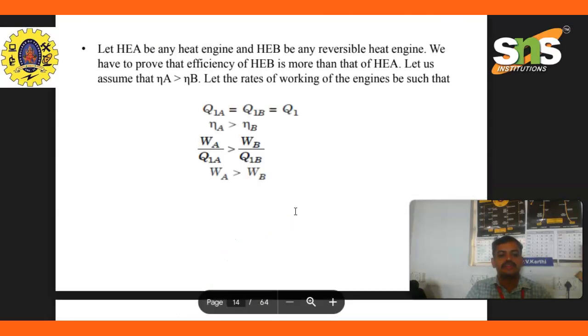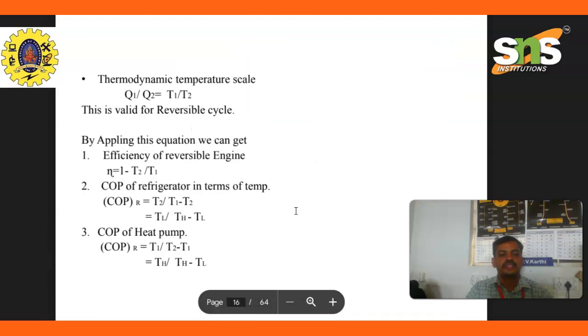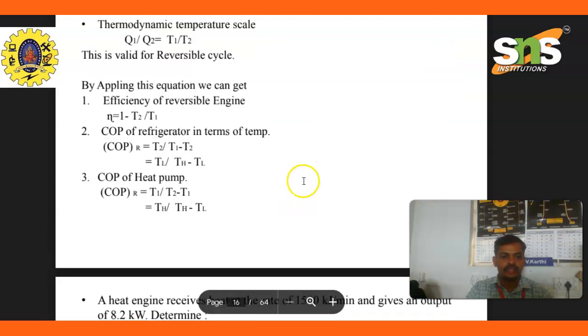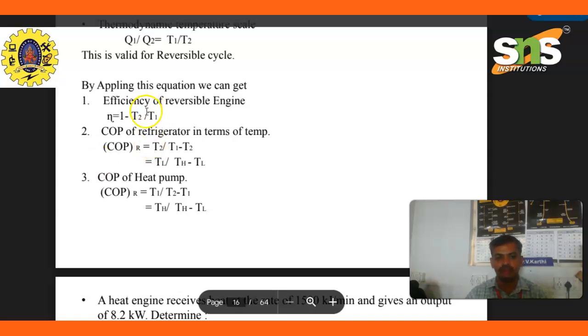The first law of engineering thermodynamics. The thermodynamic temperature scale: Q1 by Q2 equals temperature T1 by T2. Applying these equations we can get efficiency equals 1 minus T2 divided by T1.